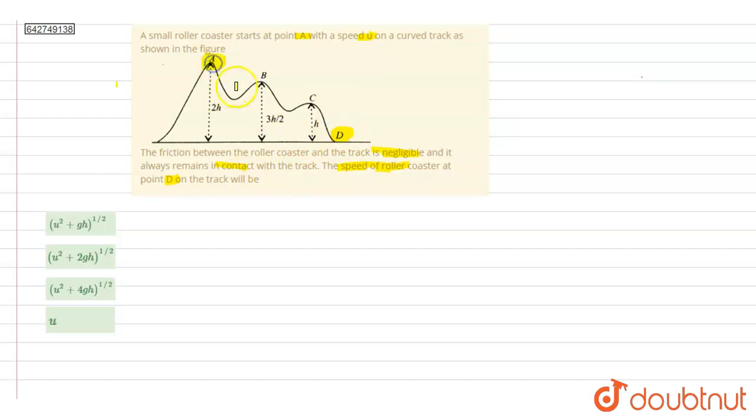Now let us look at point A. At point A, the roller coaster is having an initial speed of U. This means the roller coaster has some kinetic energy and also some potential energy because it has height 2H. But at point D, it has kinetic energy, but there is no height to it. So the height is 0, which means potential energy at point D will be 0.